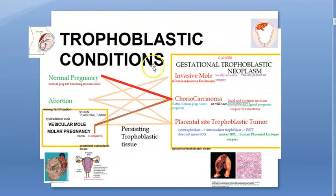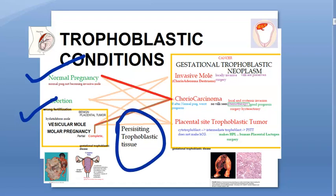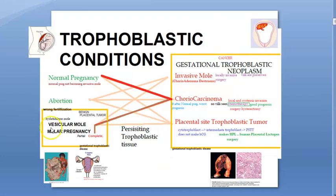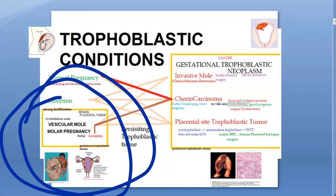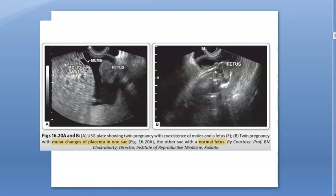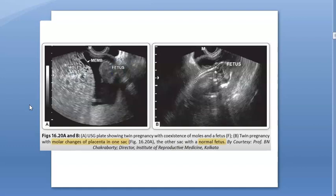In all trophoblastic conditions there is a placenta — in normal pregnancy and in any wrong fertilization. Wrong fertilization leads to a benign placental tumor. If trophoblastic tissue persists, these conditions can become cancerous. There is also an interesting case of a twin pregnancy where one placenta has undergone molar changes while the other has a normal fetus — though the other fetus also eventually dies.